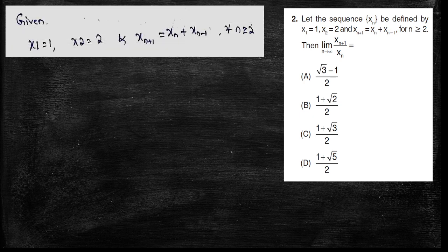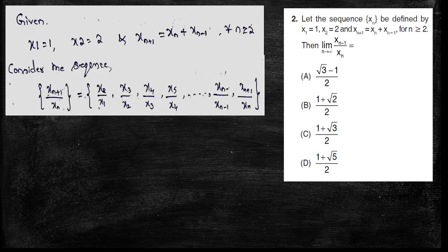As n tends to infinity, x1 equals 1 and x(n+1) equals xn plus x(n-1) for all n greater than or equal to 2. Now I am going to find the limit of x(n+1) divided by xn. I write the sequence formula: x2/x1 is the first term, x3/x2 is the second term, x4/x3 is the third term, and so on. The last term is x(n+1) divided by xn, and x4 divided by x(n-1).